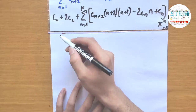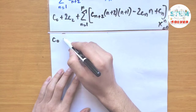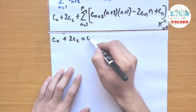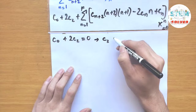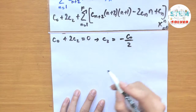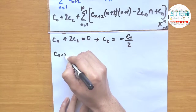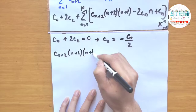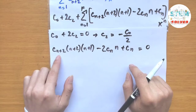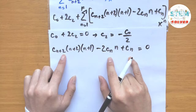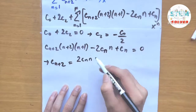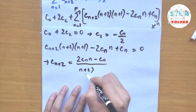Now we require the coefficients to equal zero. For the constant term: 2c_2 plus c_0 equals 0, so c_2 equals negative c_0 over 2. For the series term: c_(n+2) times (n+2) times (n+1) minus 2c_n times n plus c_n equals 0. Solving for c_(n+2): c_(n+2) equals (2n minus 1) times c_n divided by (n+2)(n+1).